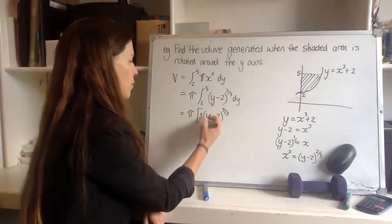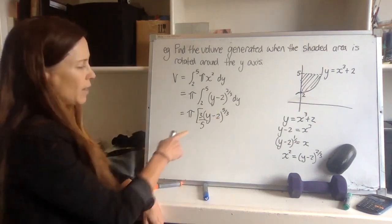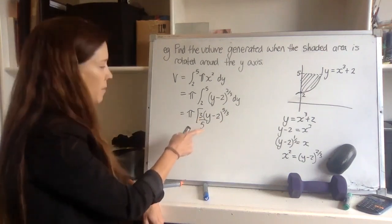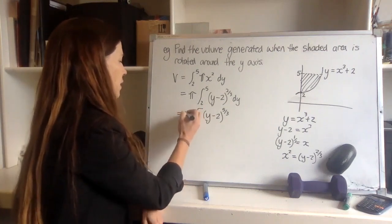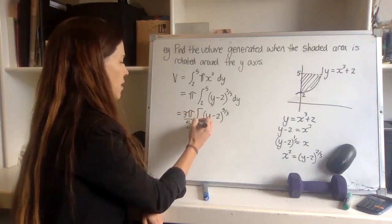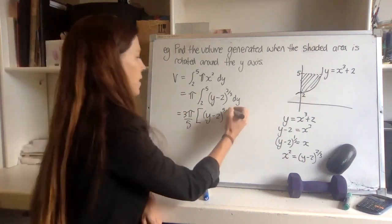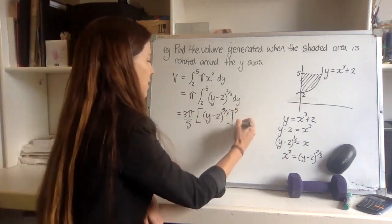Now, if I like, I can write that three-fifths in there, or to keep it out of the way, I can actually write it out here. So out here, I think, is probably a little bit tidier in this case, and then I've got my bounds here and here.